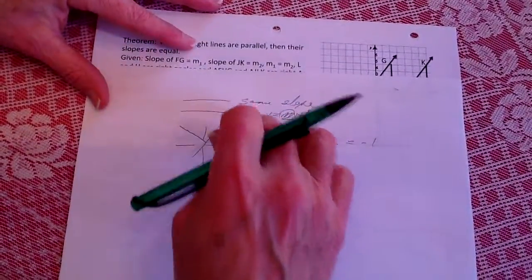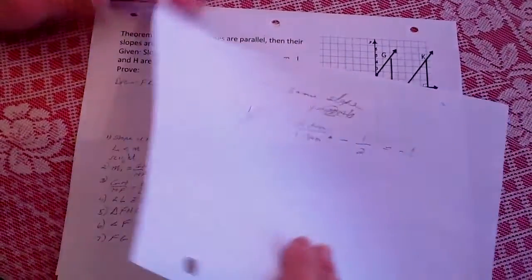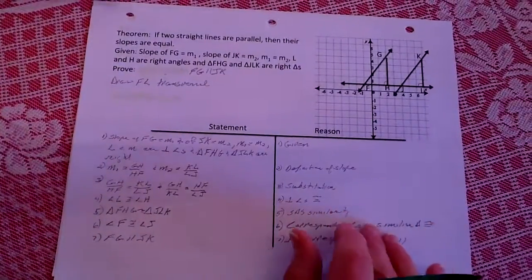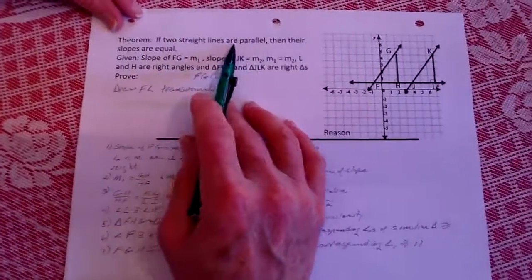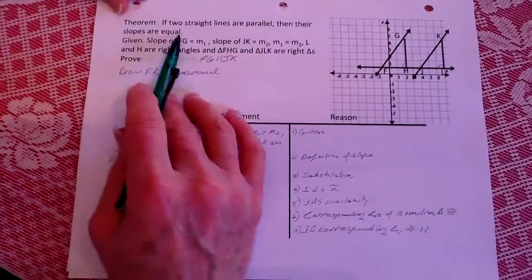Well, what we're going to do is prove these situations through geometry. First, the theorem: if two straight lines are parallel, then their slopes are equal.